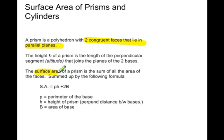The surface area of a prism is the sum of all the areas of the faces. We have a simpler form: the surface area of a prism is found by ph plus 2B. P is the perimeter of the base, h is the height of the prism, and capital B is the area of the base.